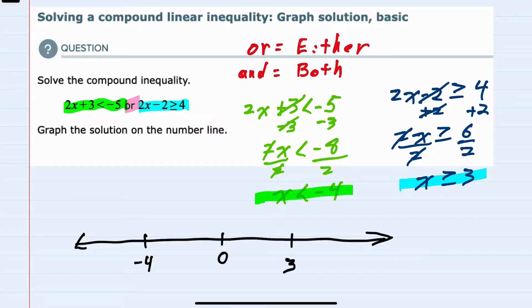And now I'll move to graphing each one of these on the number line. The first one here in green says that x is less than negative 4, not equal to negative 4. So that's going to be an empty point with the arrow going to the left since it is less than.